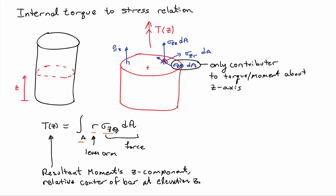And that gives me the resultant moment, or the z component of the resultant moment, relative to the center of the bar at this given elevation z. So that gives me my final relationship that connects the torque to the stresses. And dA, since we're doing things in the polar sense, is going to be r dR d theta. And this is the counterpart to the relationship that says that the internal force is equal to the integral of the stresses sigma xx dA that we had for the case of axial forces.